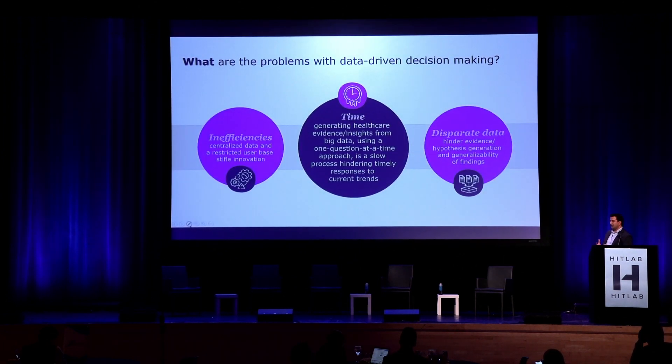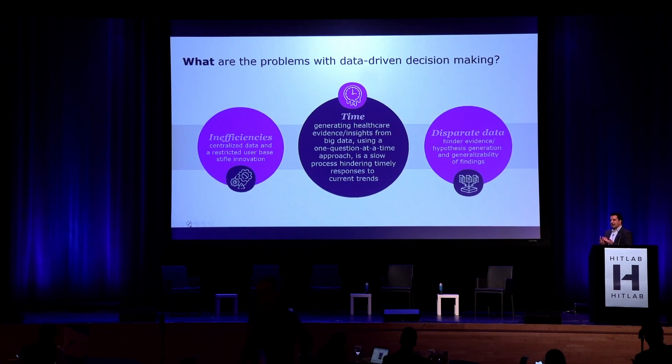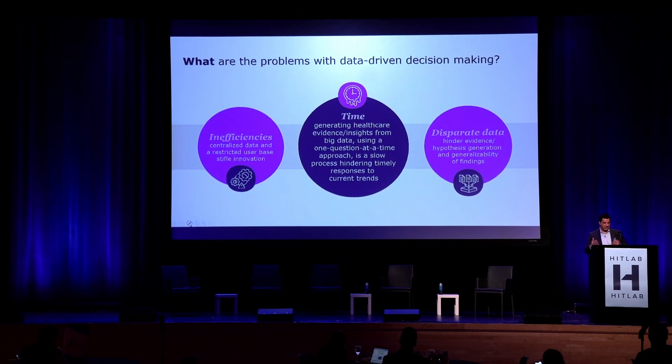What are the problems with a data-driven decision-making process? If I have a research question and a business need, I go to a specific function in my company, but data is siloed—it's a specific group that addresses that question, always a one-question-at-a-time answer. The answer depends on what data was asked. And there's a delay: you have a hypothesis, go to a group, they run analysis, and there's back and forth—it takes a long time to get to a specific answer.